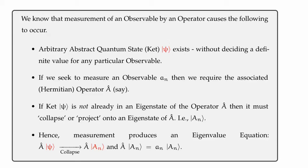Now, let's say that the arbitrary ket is not already in an eigenstate of the operator. And if that's the case, it must collapse or project into an eigenstate of the particular operator. And this will produce an eigenvalue equation, allowing us to measure the value of the eigenvalue, which is our observable.